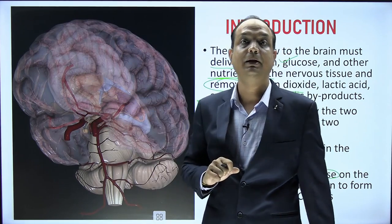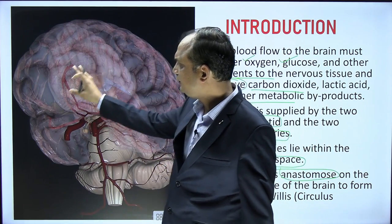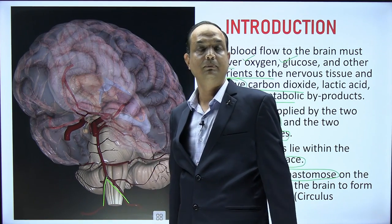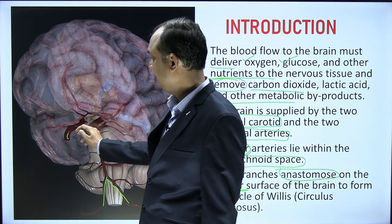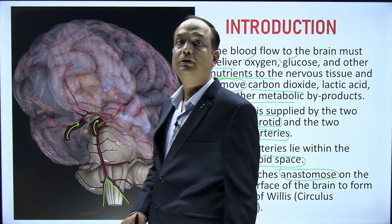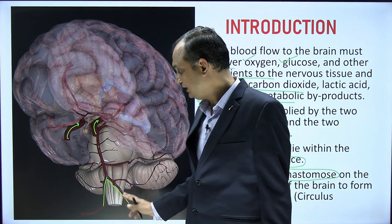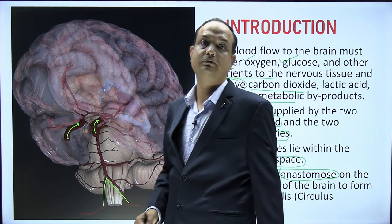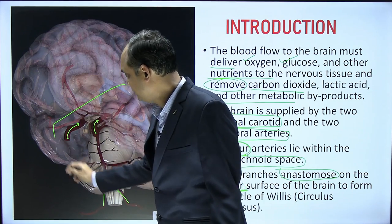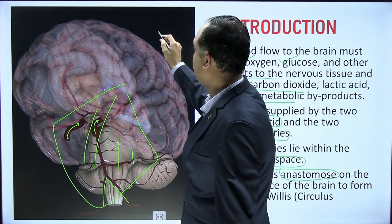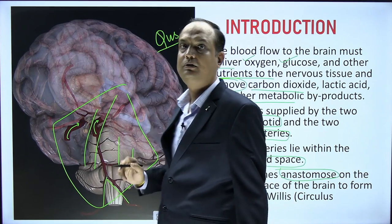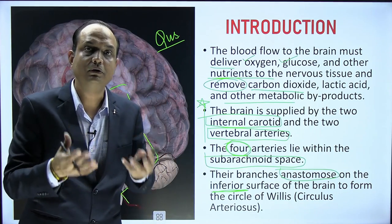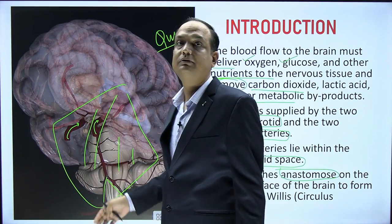Two vertebral arteries enter through the foramen magnum and two internal carotid arteries enter through the carotid canal. All four arteries anastomose with each other on the inferior surface, or base, of the brain. An important exam point: you will not find any anastomosis on any other surface of the brain — the majority of anastomosis occurs on the base of the brain.